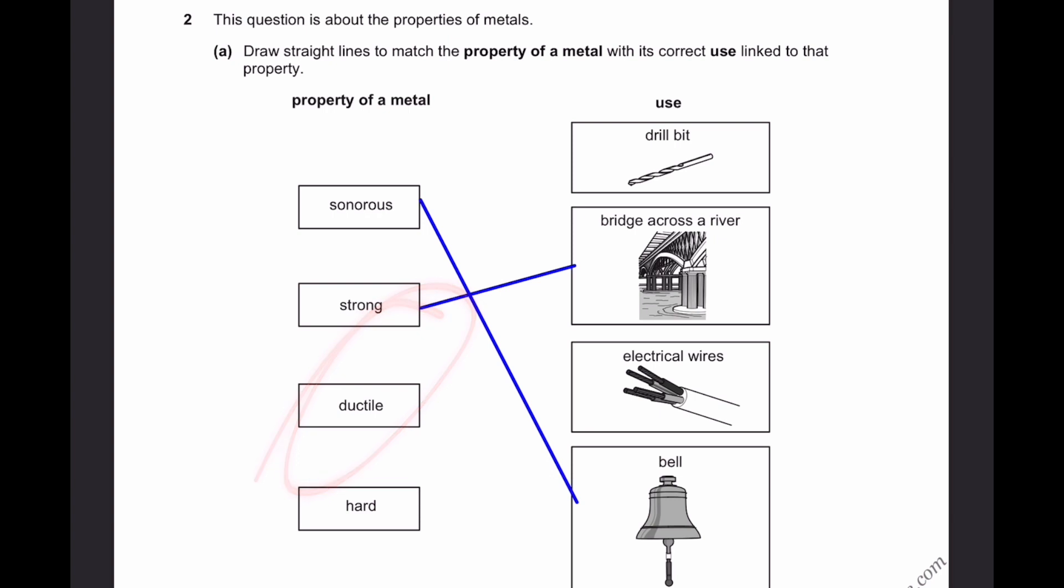Now ductile. What do you mean by ductile? It's like flexible. It can be flexible and it is not easy to break. So I have the drill bit and electric wires. It's the electric wires.